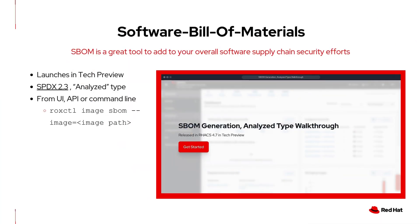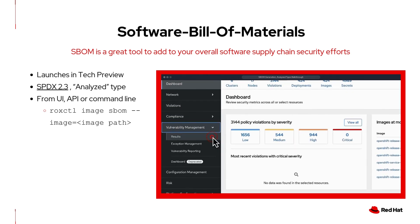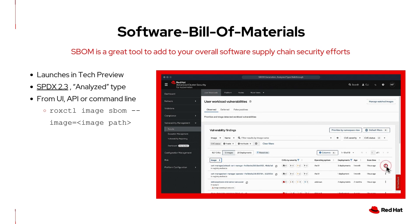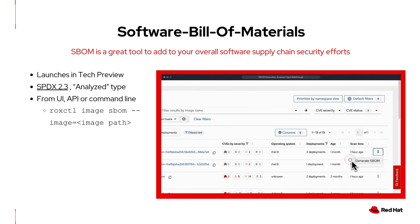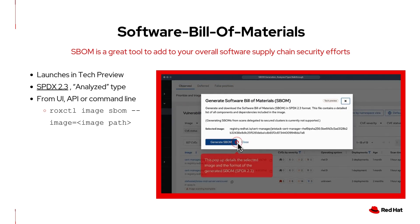The first feature I want to cover is the software bill of materials or SBOM generation in ACS. SBOMs list all the components and libraries in a software product, helping organizations understand what software they're using and running in their Kubernetes clusters. This largely stemmed from the NIST executive order back in 2021. In ACS 4.7, we're bringing SBOM generation through the UI and the command line with the ROXCTL CLI, so you can shift it left in your pipeline.